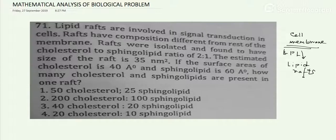When we see this kind of problem, we might initially fear it because they have given five to six lines in this question. But without reading and analytically analyzing it, we cannot say it is a tough question. If a first or second attempt CSIR NET candidate sees this, they might think it is very tough. So first of all, we have to read what they have given and what they want to know from us.